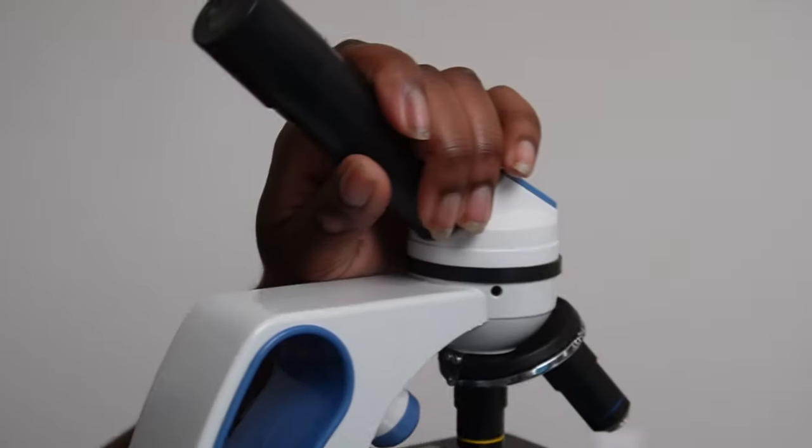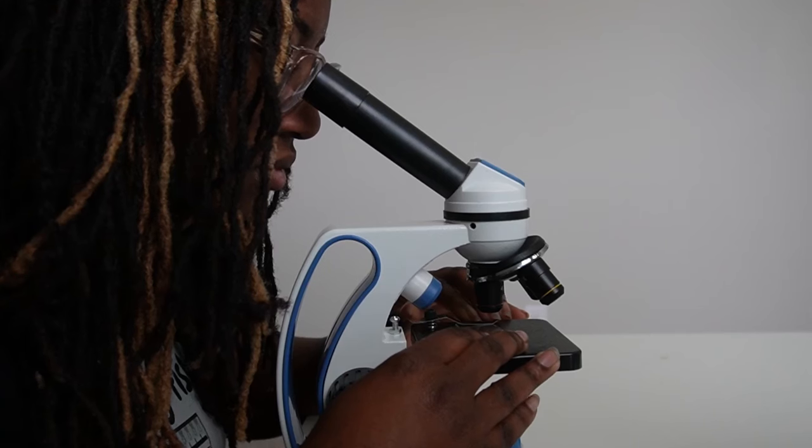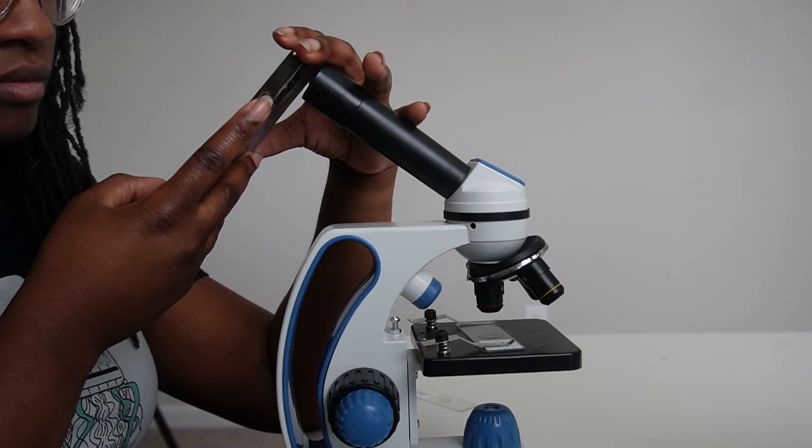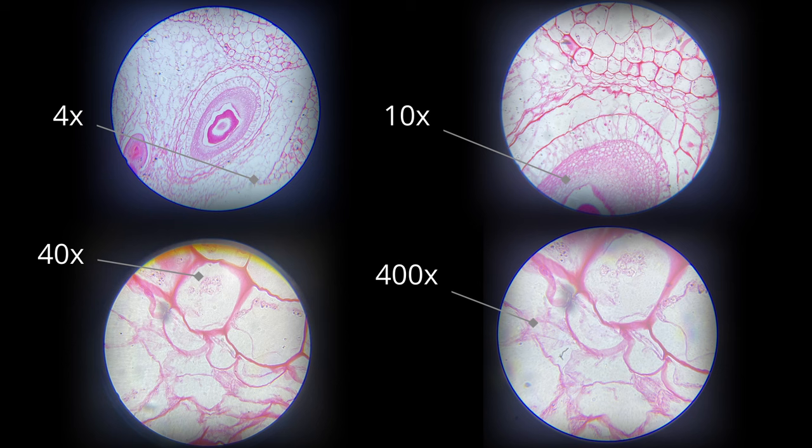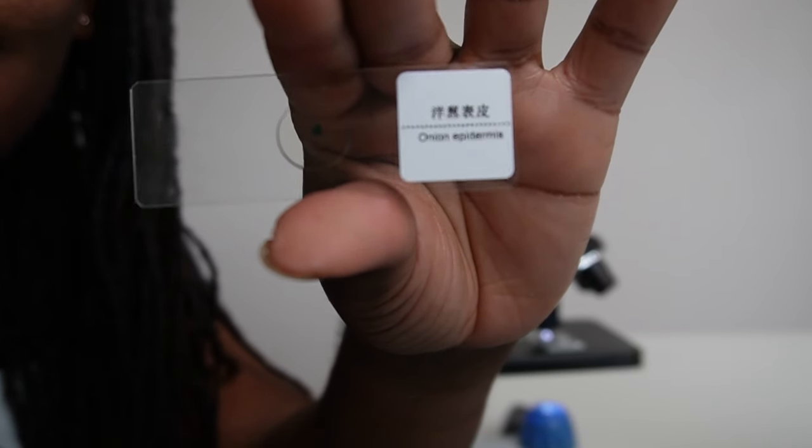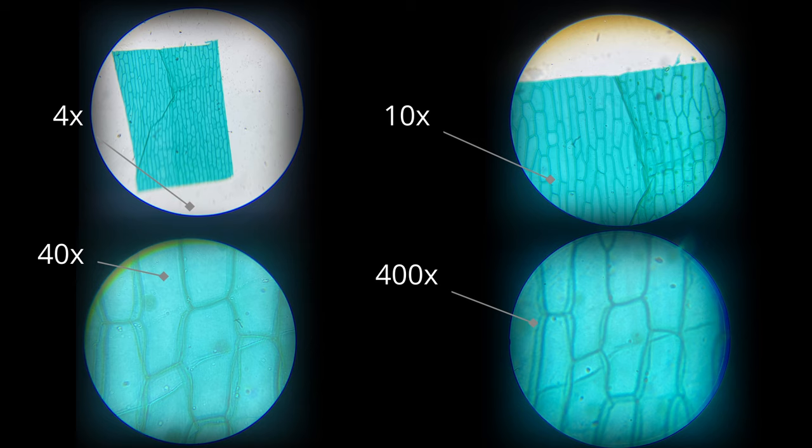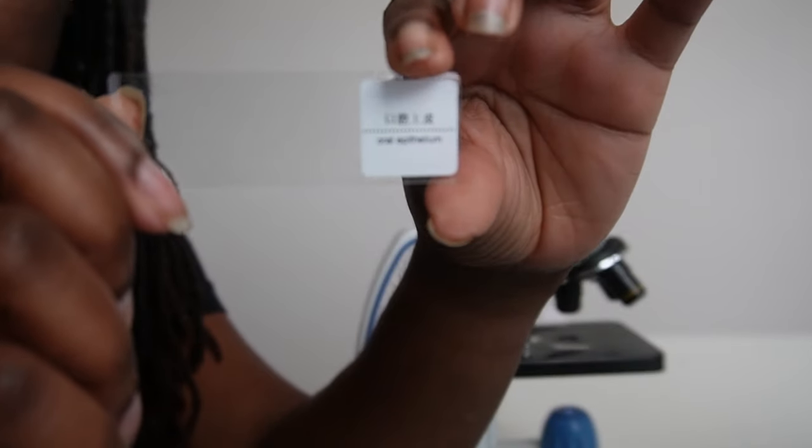Let me put my stuff back on before I break my phone. Our first slide is tomato flesh. Our next slide is onion epidermis. And our last slide is oral epithelium.